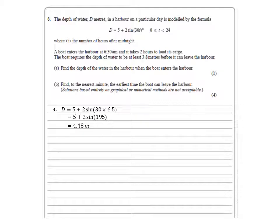For part b we need to find to the nearest minute the earliest time the boat can leave the harbour. So for the boat to leave the water needs to be at least 3.8 metres. So we're going to replace d with 3.8. This time we need to work out t, the time. Rearranging this gives us 2 sin 30t equals minus 1.2. Sin 30t equals minus 0.6.